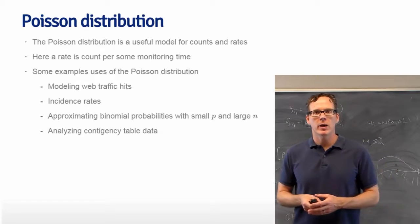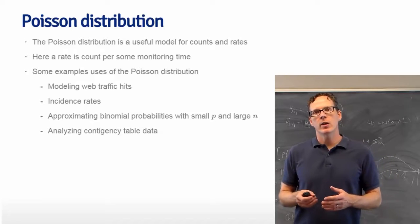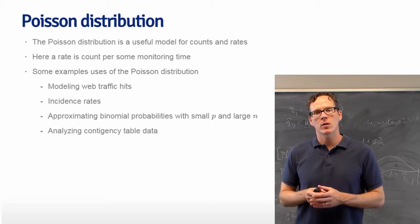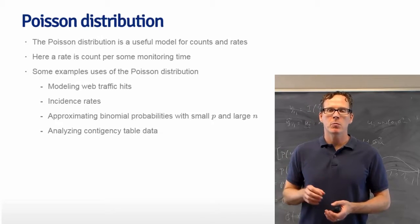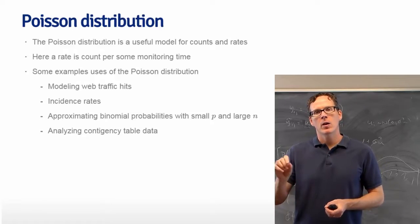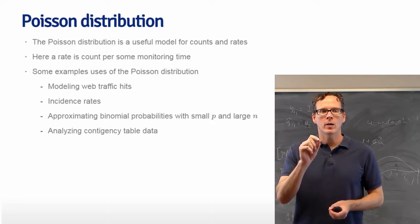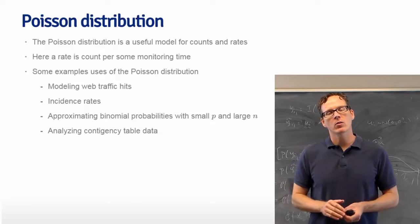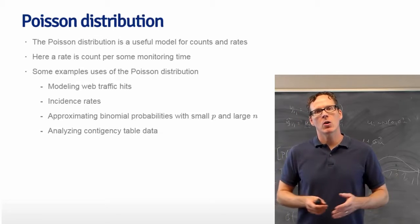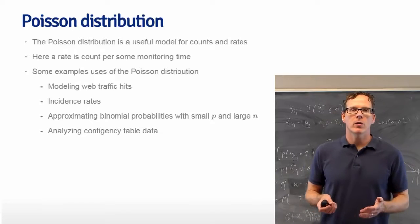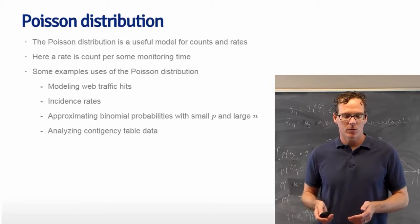An application that I like quite a bit is so-called contingency table data. If you have an instance where you've just counted the number of occurrences of a different collection of variables, like if I took a random sample of people and I counted the number of people that had blonde hair, brown hair, and black hair, and I cross-tabulated that with the number of people who had blue eyes, brown eyes, and hazel eyes, that table of counts is called a contingency table. Poisson models are very useful for modeling contingency table data. They give a very elegant framework for doing that.